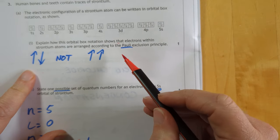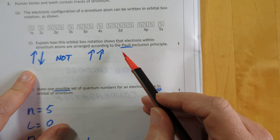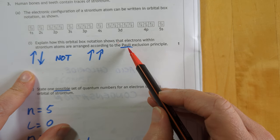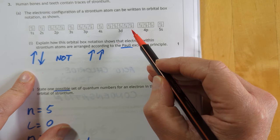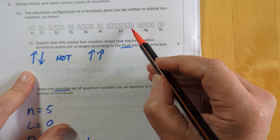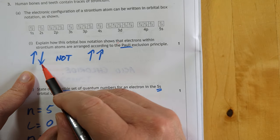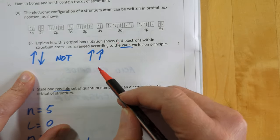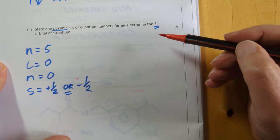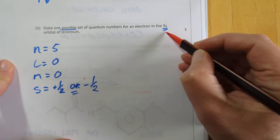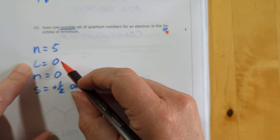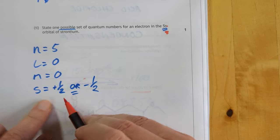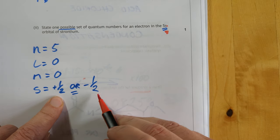Explain how this notation shows the electrons within the strontium atoms are following Pauli's exclusion principle. Pauli is the spins, you can't have two parallel spins for electrons within an orbital, so all these spins are anti-parallel. One possible set of quantum numbers. Because it's 5s, n must be 5. Because it's s, l must be 0. And if l is 0, m can only be 0. And s can, you could either quote plus 1/2 or minus 1/2.